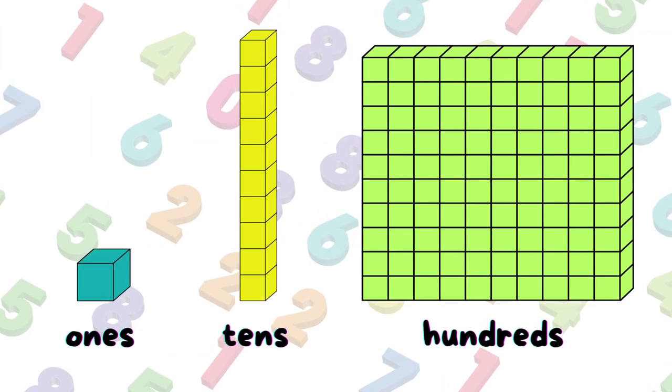Imagine this grid represents a number. Each box is a place, and each place has its own value. Let's look at a number together.